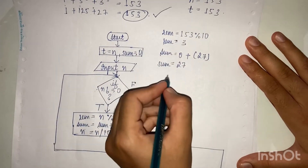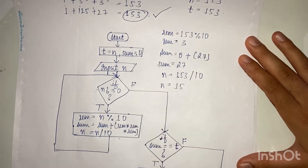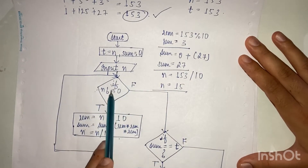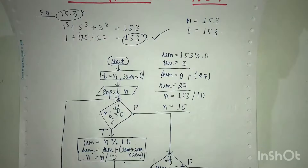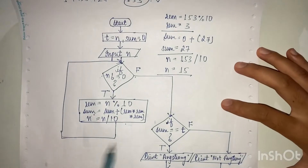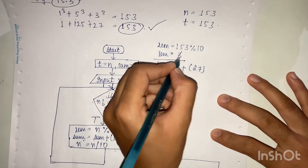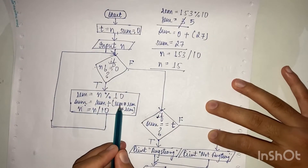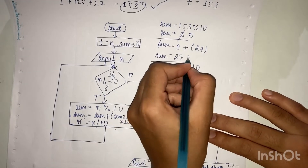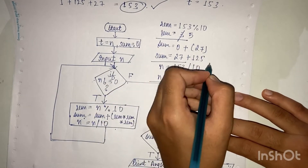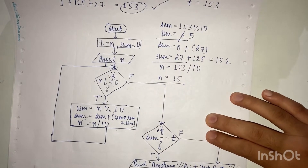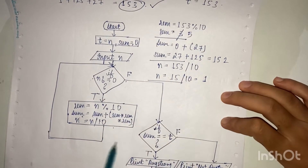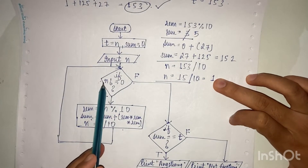Check condition again: 15 not equals 0 — true, enter loop again. Now n = 15, so rem = 15 % 10 = 5. Sum = 27 + 5³ = 27 + 125 = 152. Then n = 15 / 10 = 1. So now rem = 5, sum = 152, n = 1.